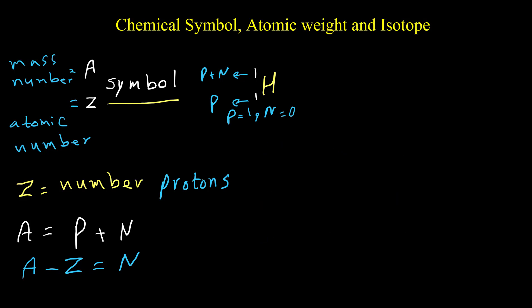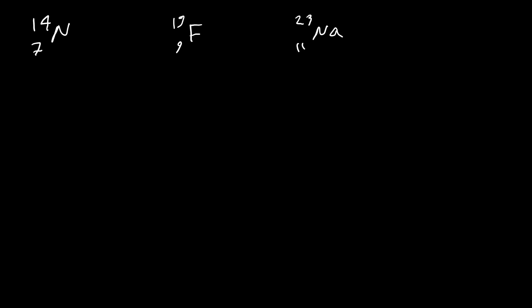Here is another example: we have six protons in this atom, and the number of neutrons equals mass number minus atomic number, so we also have six neutrons. The number of electrons in these two examples equals the number of protons, because hydrogen, carbon, or any other neutral atom must have equal numbers of protons and electrons.